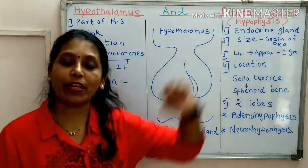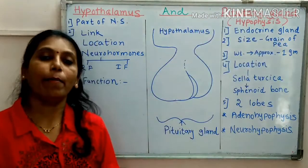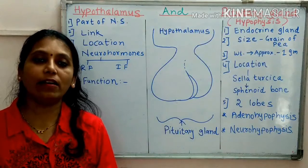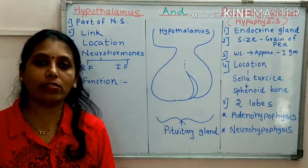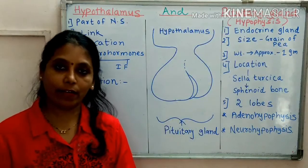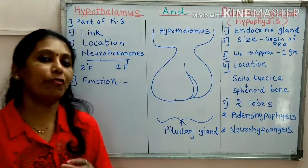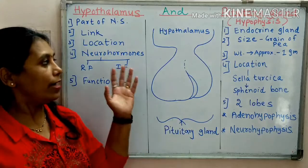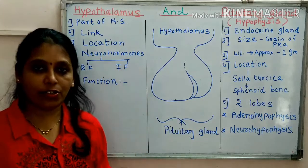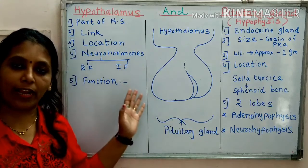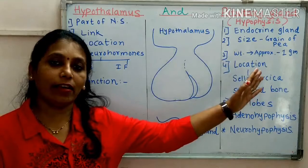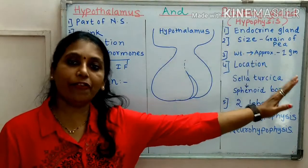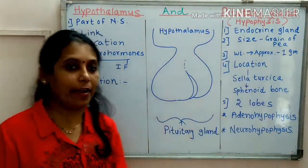What is pituitary gland? Pituitary gland is the smallest endocrine gland. First we will see the external structure of hypothalamus and then we will study the external structure of pituitary gland.